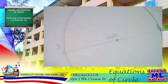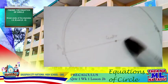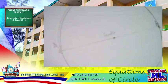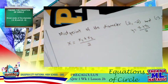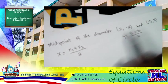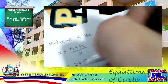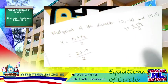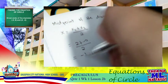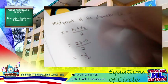To determine the equation of the circle, let's identify first the coordinates of your center. We have our midpoint formula: x sub 1 plus x sub 2 divided by 2. From our given, substituting: 2 plus negative 3, all over 2, is simply negative 1 half. That is the value of your x.